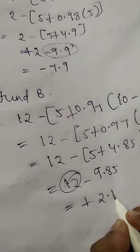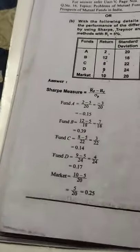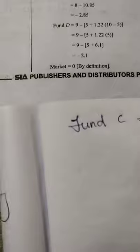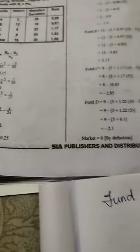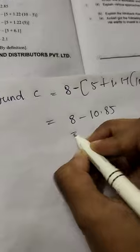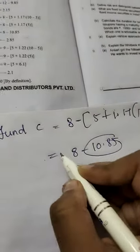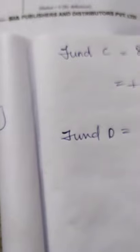Now similarly we need to do for Fund C. So for Fund C, Rp will be 8, so 8 minus Rf value is fixed which is 5, plus we get here beta value 1.17 into 10 minus 5. After calculation we get 8 minus 10.85. Here minus 10.85, the minus value is bigger than this, so plus of minus is minus. The answer will be minus 2.85.